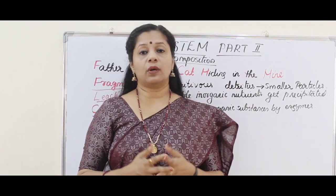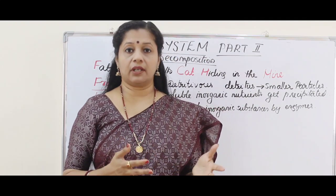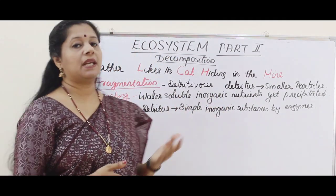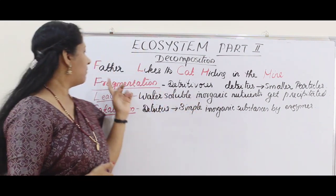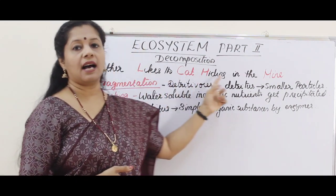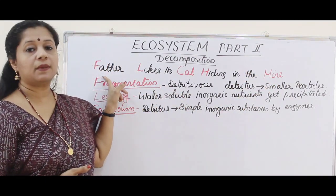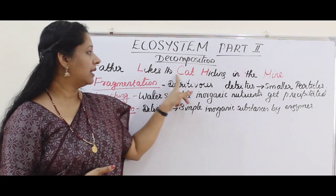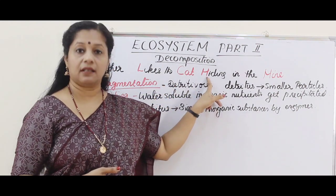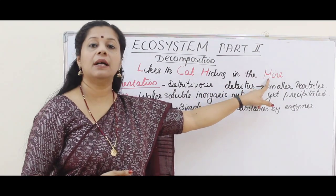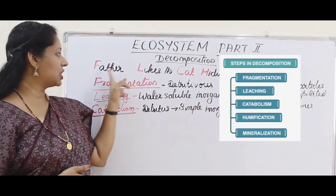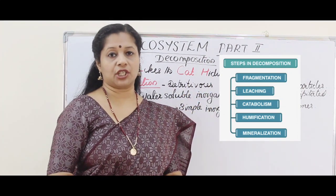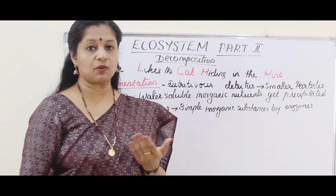If you look at the different stages of decomposition, it has five stages, which we can remember using a mnemonic: 'Father likes the cat hiding in the mine.' F for fragmentation, L for leaching, cat for catabolism, H for humification, and mine for mineralization. Once again: fragmentation, leaching, catabolism, humification, and mineralization. We will now discuss these steps one by one.